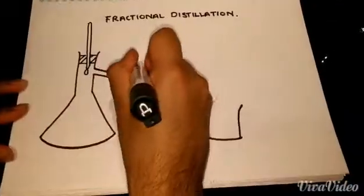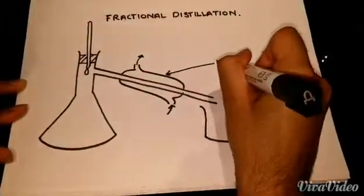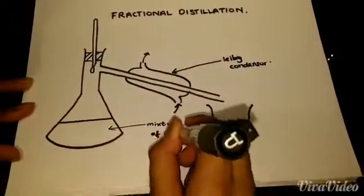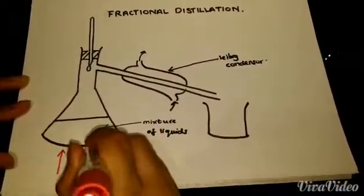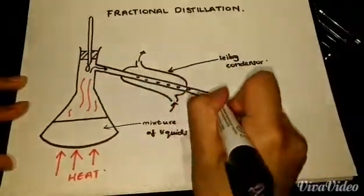The solution is heated until boiling. The liquid with the lowest boiling point vaporizes first. The vapor is then condensed back into a liquid in the Leibig condenser and collected in a container. Fractional distillation has many applications including the separation of crude oil into its components.